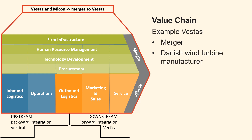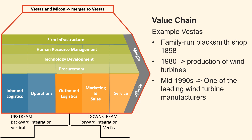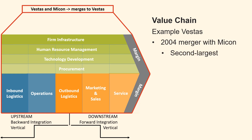We shall now review a merger as an example of the value chain, examining it through the lens of a merger involving the Danish wind turbine manufacturer Vestas and its potential effects on Vestas' value chain. Vestas started as a family-operated blacksmith shop in 1898 and gradually evolved to produce industrial metal goods. Since 1980, Vestas has been manufacturing wind turbines and has grown into one of the world's leading manufacturers since the mid-1990s. In 2004, Vestas merged with Micon, the second largest Danish wind turbine manufacturer.